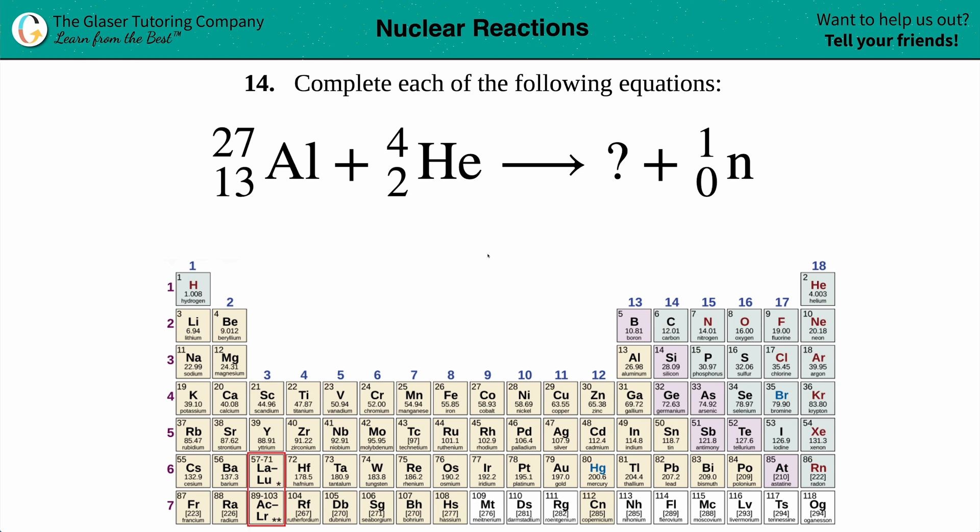Number 14. Complete each of the following equations, and then we have this nuclear reaction right here. So we have aluminum with the 27 on top, 13 atomic number on the bottom, combining with, so adding, with an alpha particle. An alpha particle is always going to be a helium with the 4 on the top and 2 on the bottom. So if you want to just memorize the 4 and the 2 with the helium as an alpha particle, that's fine with me. And this will turn into something, which is what we have to find out, plus a neutron.